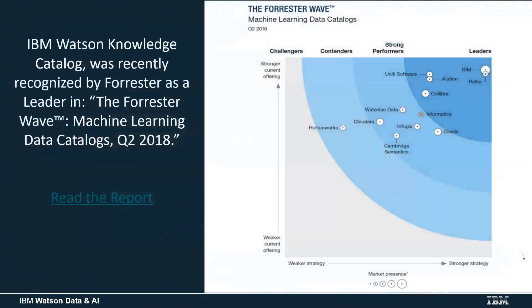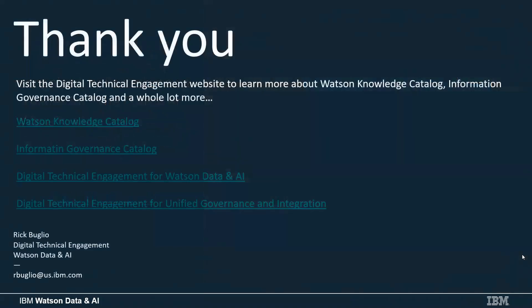IBM's Watson Knowledge Catalog was recently recognized by Forrester as the leader in what they categorized as machine learning data catalogs. There are many competitors in this category, and we were recognized as the leader — largely due to our self-service and governance capabilities. I encourage you to read the Forrester report; a link is provided. I also want to give a shoutout to DTE — there are great Digital Technical Engagement assets available for Knowledge Catalog, Information Governance Catalog, Watson Studio, Watson services, and unified governance integration. Take advantage of what's out there.